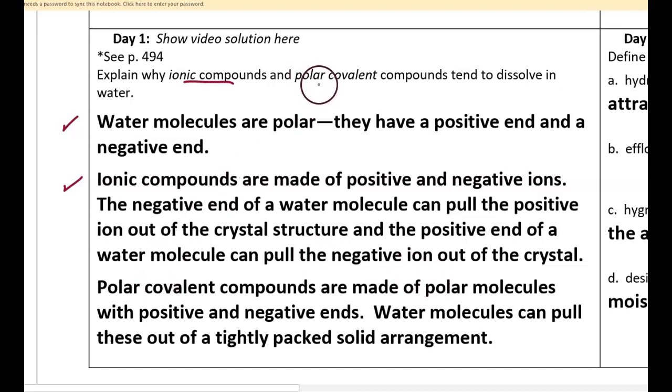Now I'm going to explain the part about polar covalent compounds dissolving. Polar covalent compounds are made of polar molecules that have positive and negative ends, so the water molecules can pull these out of a tightly packed solid arrangement.